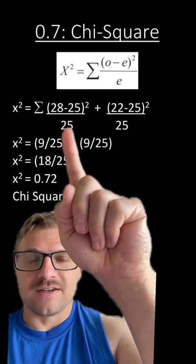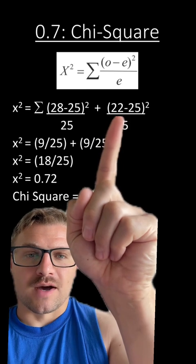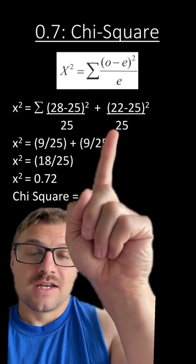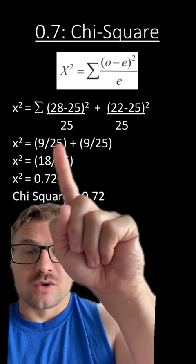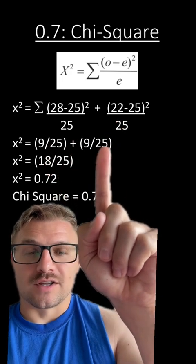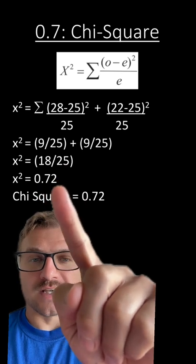28 minus 25 is 3. 3 squared is 9. Over here, 22 minus 25 is negative 3. Negative 3 squared is 9. So we're going to place 9 over 25 plus 9 over 25. When you add these two values together, it's going to be 18 over 25 or 0.72.